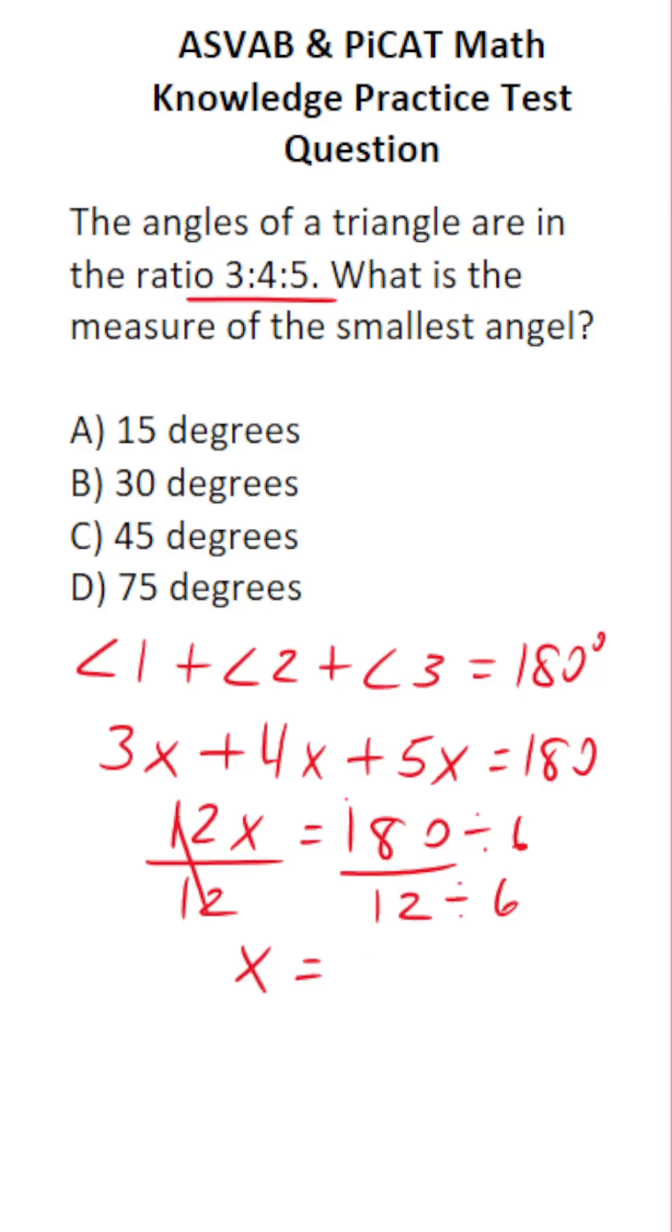Therefore, 180 divided by 6 is going to be 30. 12 divided by 6 is 2. 30 divided by 2 is 15.